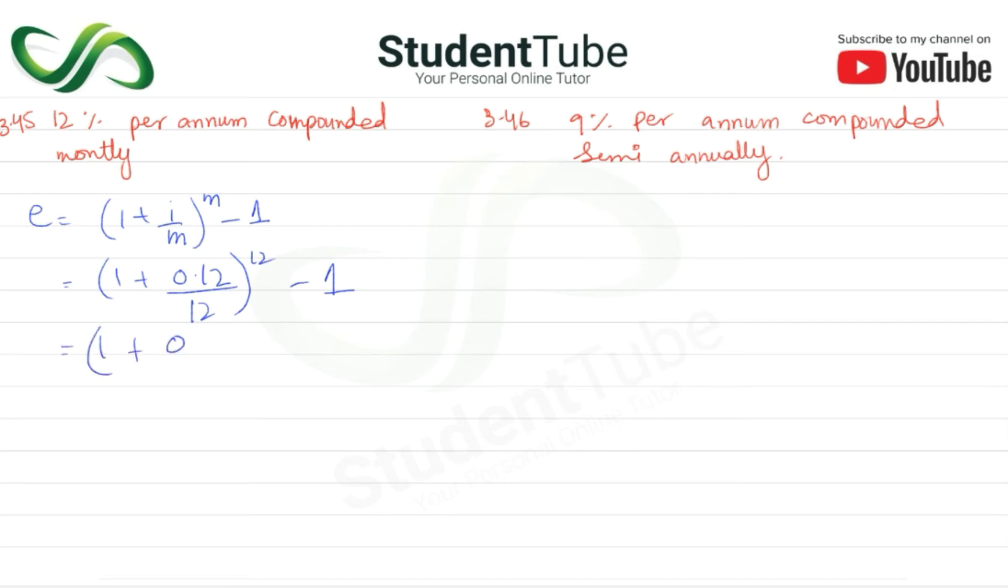gives us 0.01, then (1.01)^12 minus 1. With the exponent 12, this becomes 1.1268 minus 1, which equals 0.1268. To convert to percentage, we multiply by 100, giving us 12.68 percent.